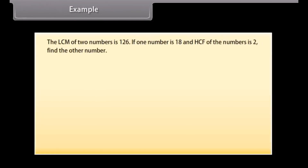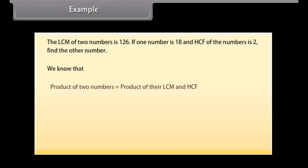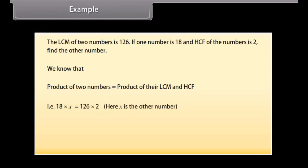Example. The LCM of 2 numbers is 126. If one number is 18 and the HCF of the numbers is 2, find the other number. We know that the product of 2 numbers equals the product of their LCM and HCF. So 18 into X equals 126 into 2. Therefore X equals 126 into 2 divided by 18, which gives X equals 14.